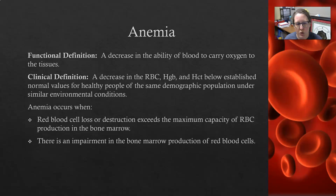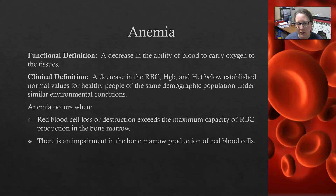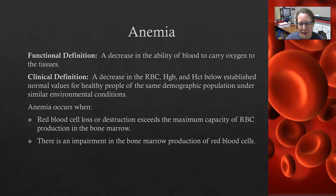Anemia occurs when either there is red blood cell loss or red blood cell destruction, and that loss or that destruction exceeds the maximum capacity of the red cell production in the bone marrow. So you're losing or destroying more than can be replaced, and therefore there's a deficit, and so you get anemia.